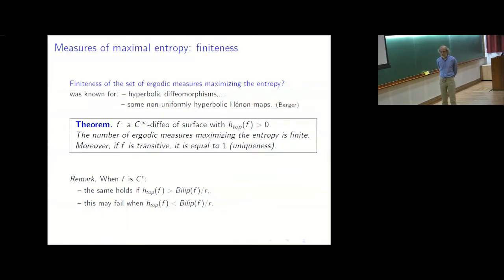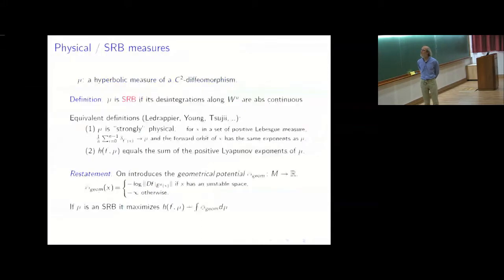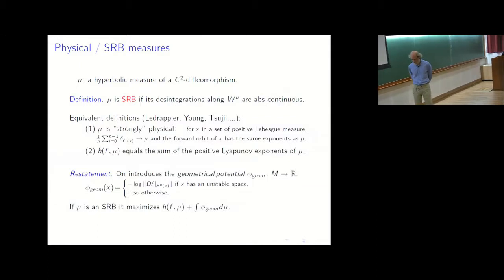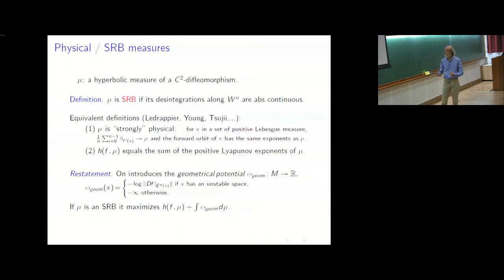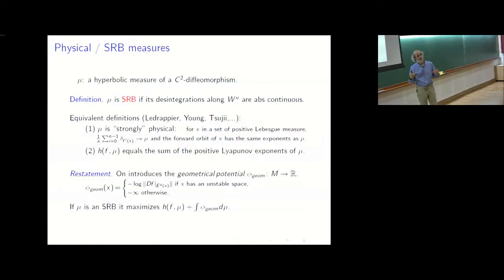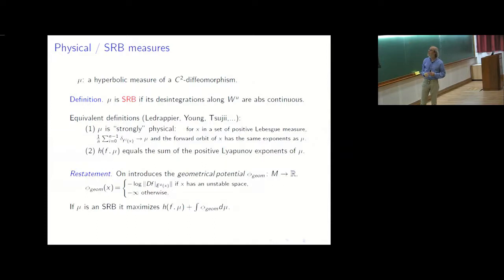These are the maximizing measures, but you may look at other natural measures — the physical measures. When you consider physical measures that are hyperbolic, you get geometrical information, and you fall inside the class called SRB — for Sinai–Ruelle–Bowen. For the definition of an SRB measure, restricting to hyperbolic measures: since the measure is hyperbolic, almost every point has an unstable manifold, and you may disintegrate the measure along the unstable manifold. SRB means that these disintegrations are absolutely continuous.